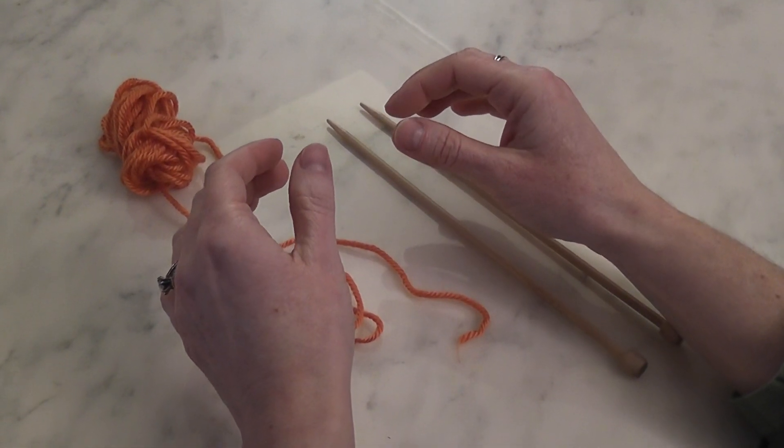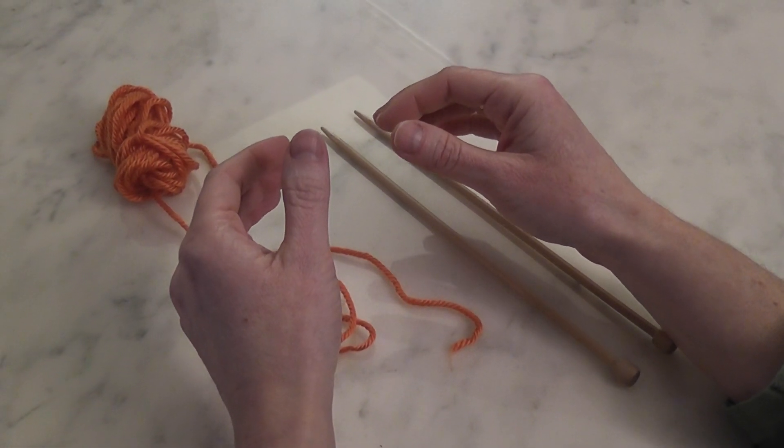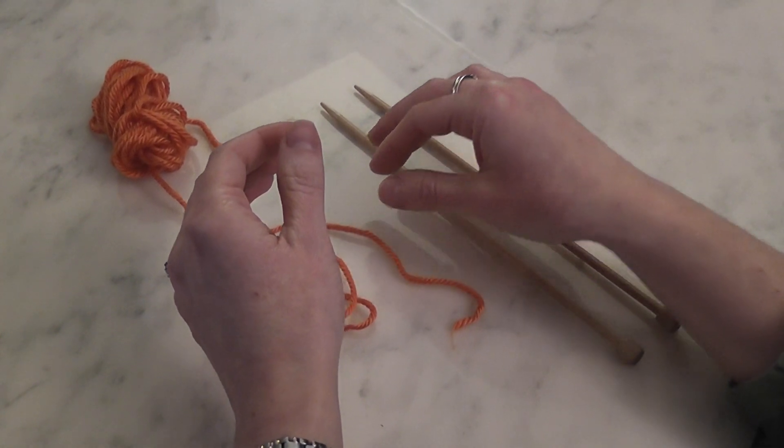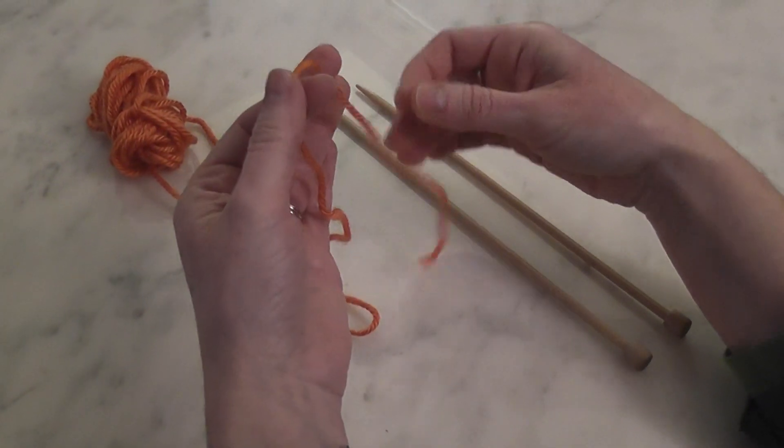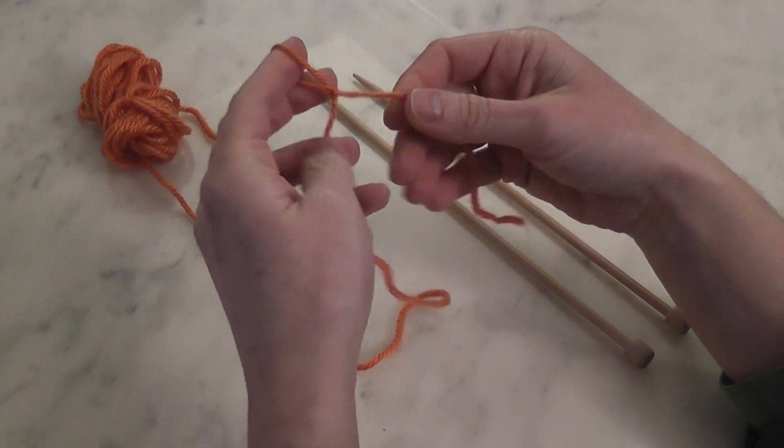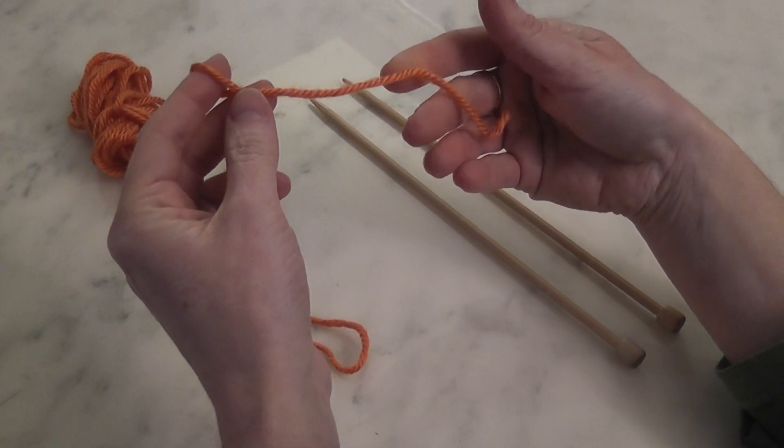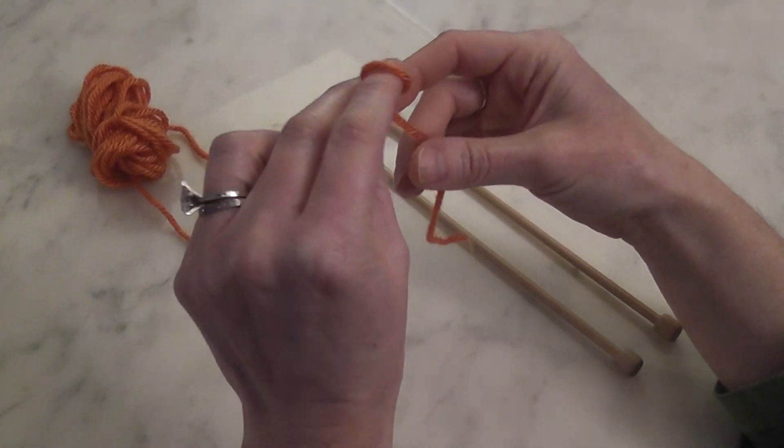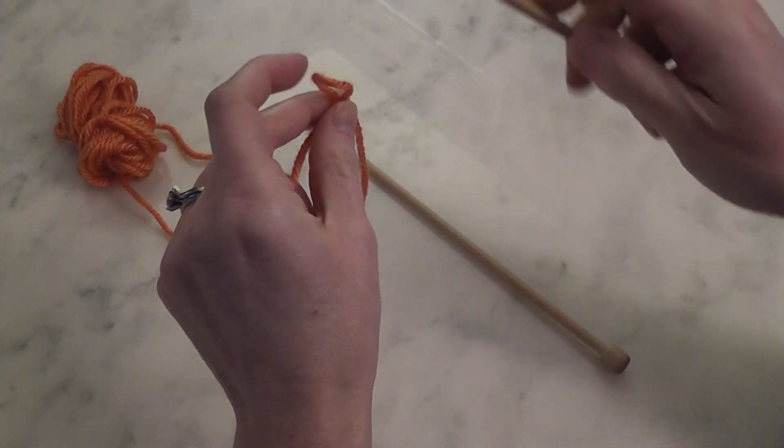The first cast on I'm going to show you is called the Backward Loop Cast On, also known as the E Cast On. It begins with a slip knot, which we learned in the last video. You do not need a long tail for this cast on, as you will be using your working yarn to create your stitches.